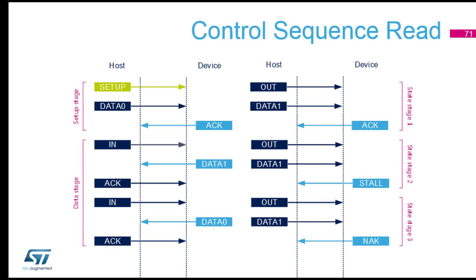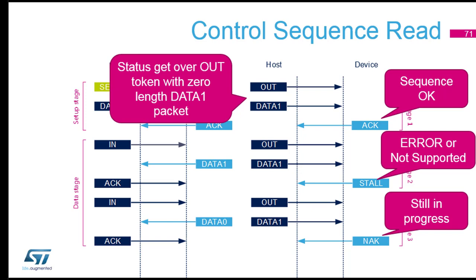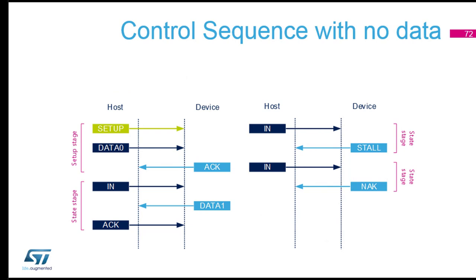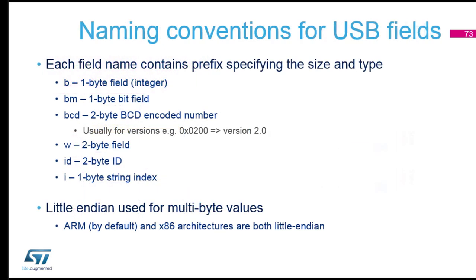Control read is quite similar, but now data comes from the device. This is typically for getting descriptors — when you want to know the device capabilities. It starts with a SETUP token and DATA0 containing information about the read sequence and the expected data length. The device replies ACK. Then the data transfer with toggling follows. The last case is a setup with no data to transfer — you just send information without expecting anything back. You still have the status stage to confirm what happened was okay.